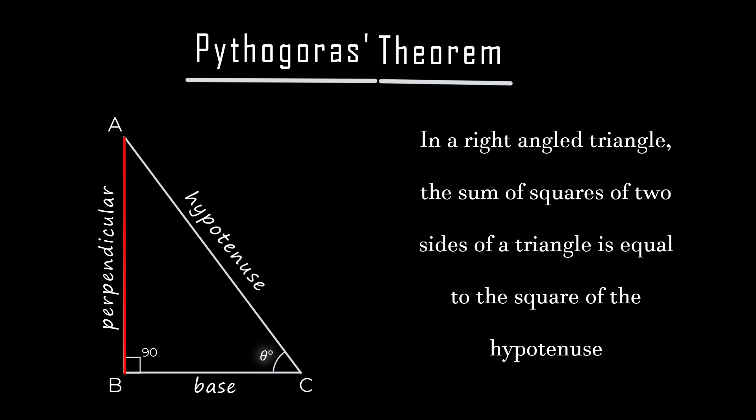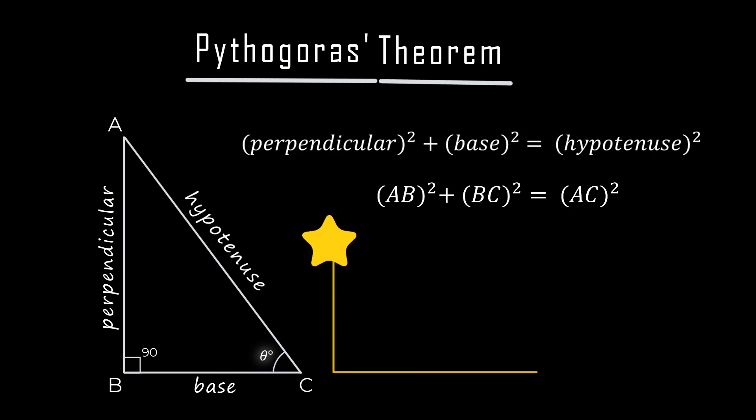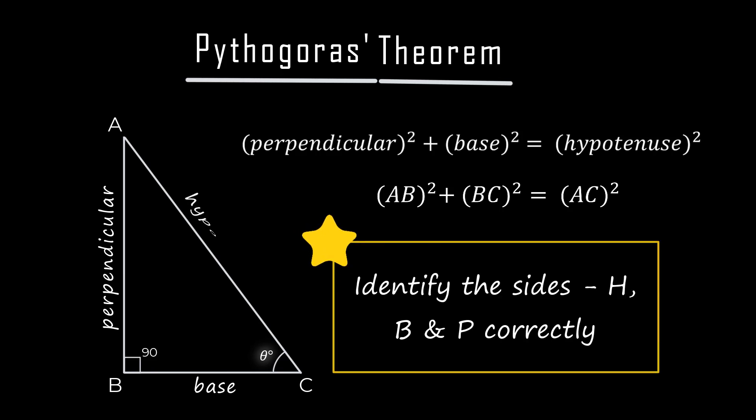As per Pythagoras theorem, the sum of squares of two sides is equal to the square of the hypotenuse. AB squared plus BC squared is equal to AC squared. It's very important that you identify the hypotenuse, base and perpendicular so that you don't get confused while deriving trigonometrical values and ratios.